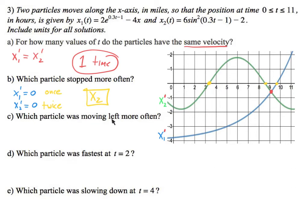Which particle was moving to the left more often? To find out when something's moving left, you look for when the velocity is negative. So we look at each velocity graph and see which particle moved left more often. Looking at v1's velocity, we want to know when it is negative.